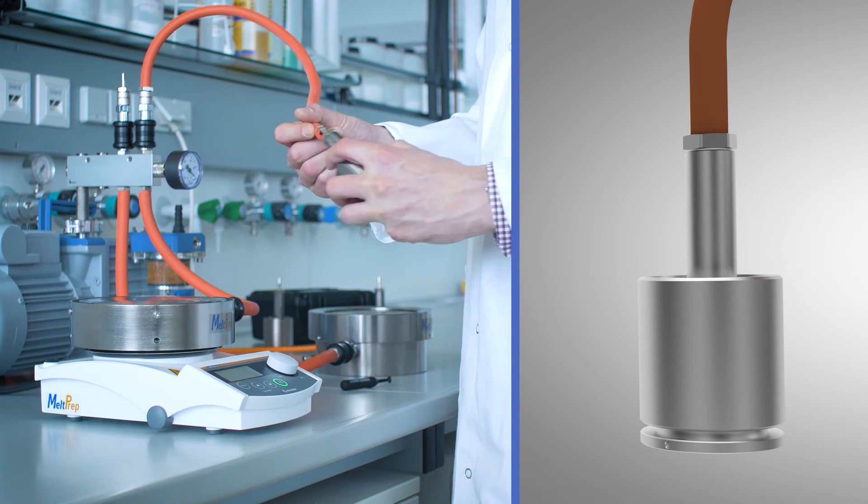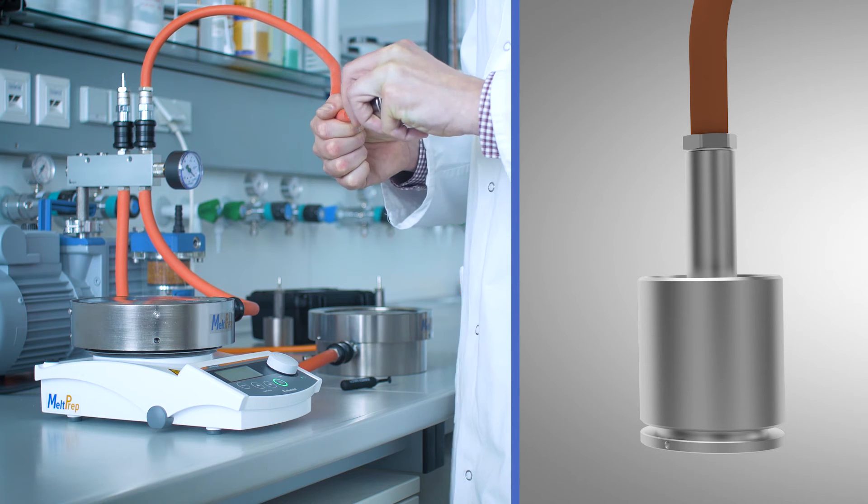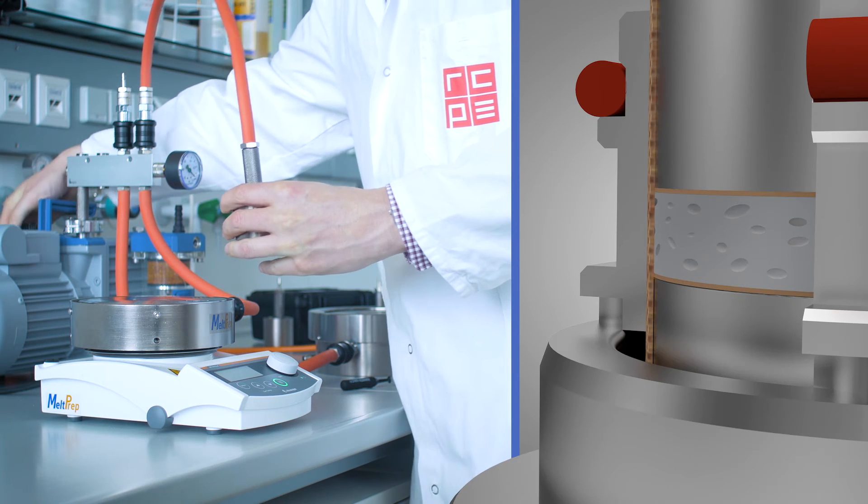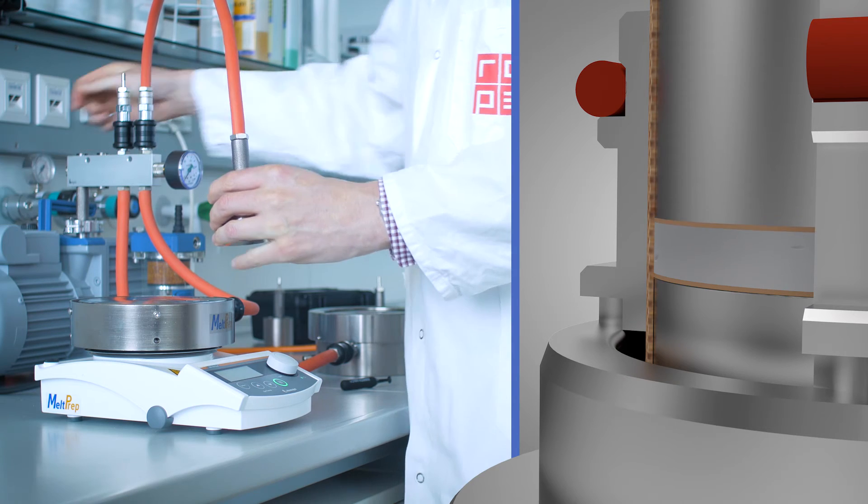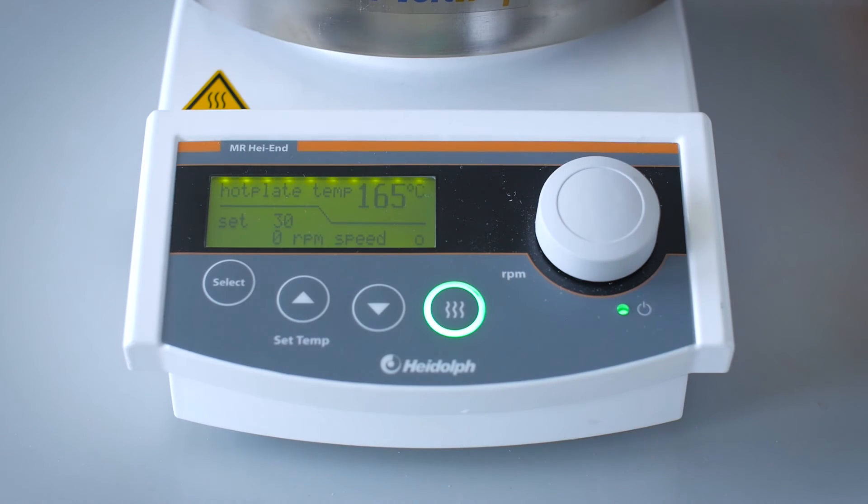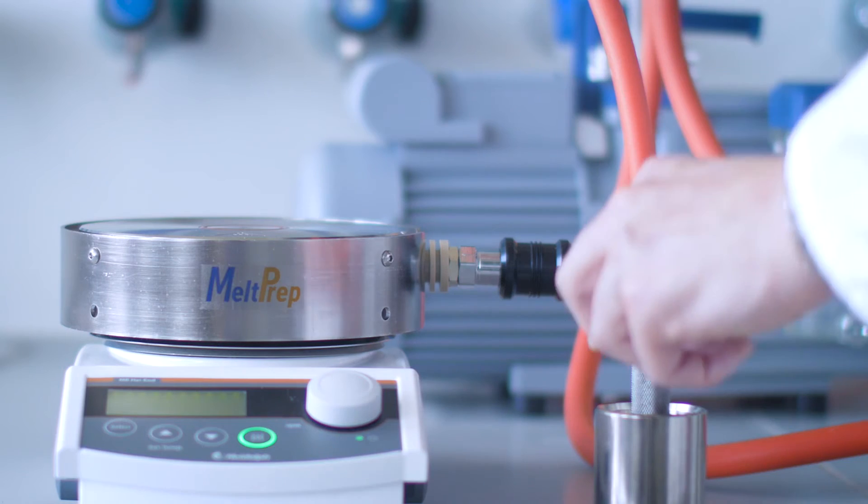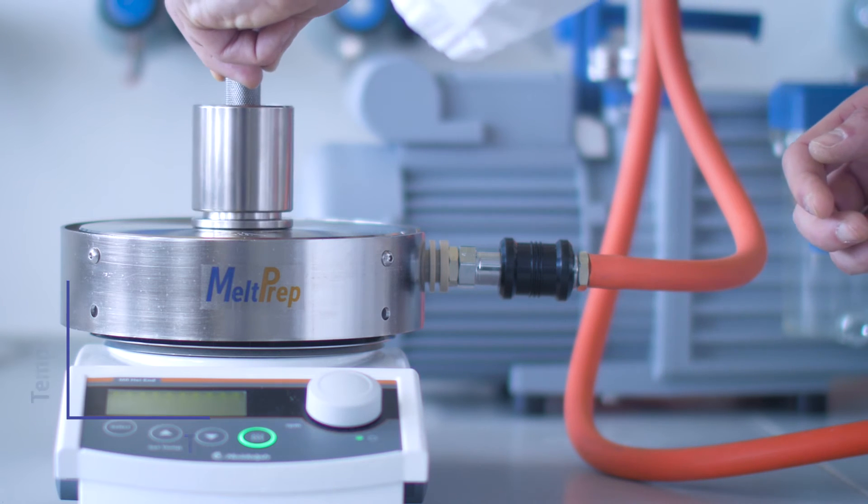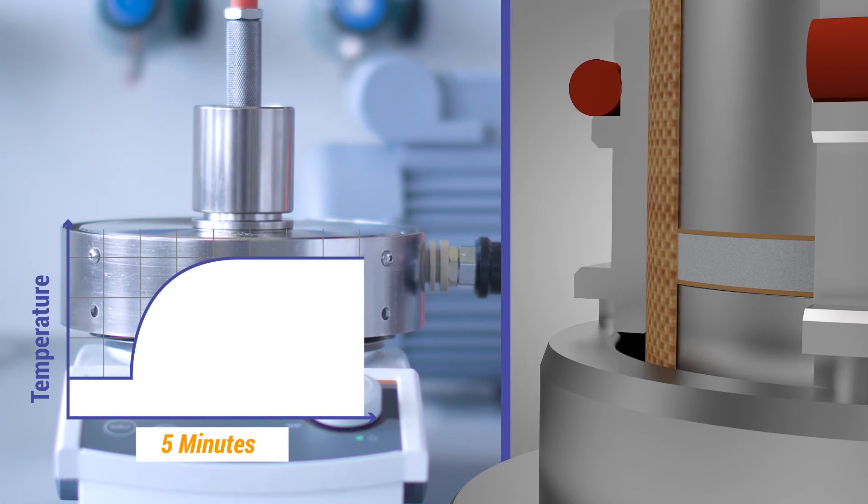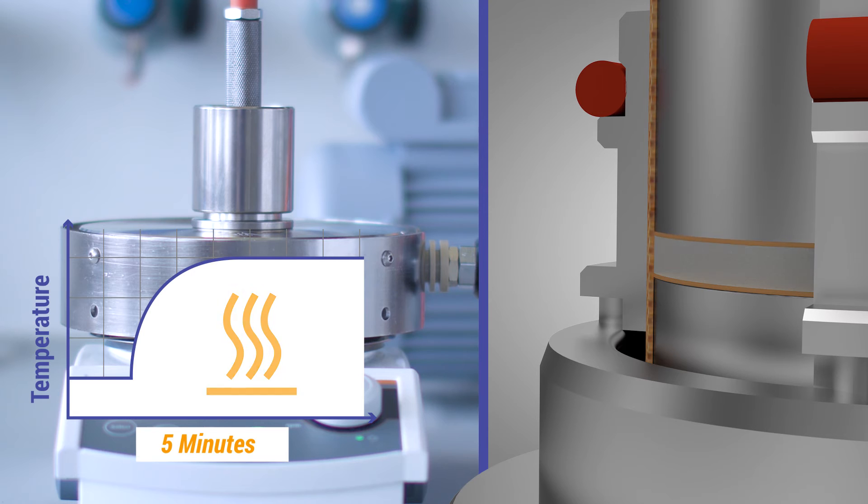We now apply vacuum to the chamber, building up a compressive force compacting the powder, while air, moisture and other volatiles are removed slowly. The sample is now ready to be molded and because we have such a small sample volume, that takes only about 5 minutes rather than the hour long melting time you would get with compression molding.